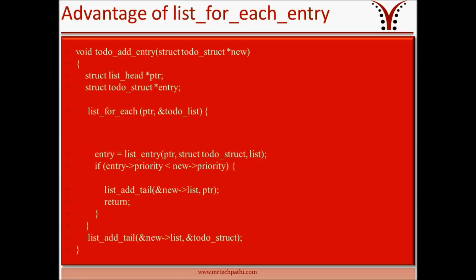Let's discuss the advantage of using list_for_each_entry instead of list_for_each. list_for_each_entry is equivalent to list_for_each combined with list_entry macro, except only one variable is needed. In the code using list_for_each, for every loop iteration we call the list_entry macro. But when we use list_for_each_entry macro, there is no need to call list_entry separately.